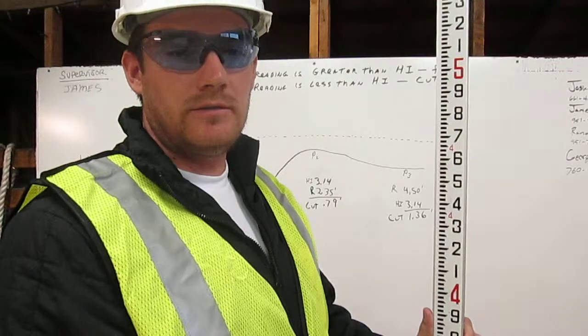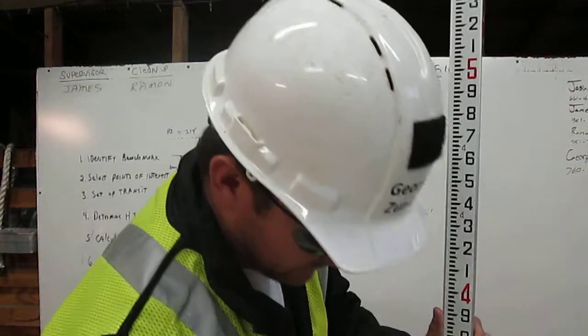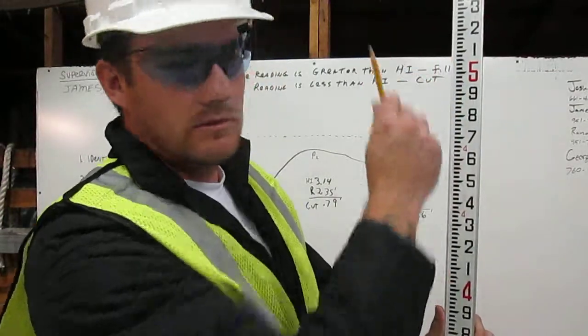The engineer's ruler is broken into feet. One foot, two foot, three foot, four foot, five foot, and so on.